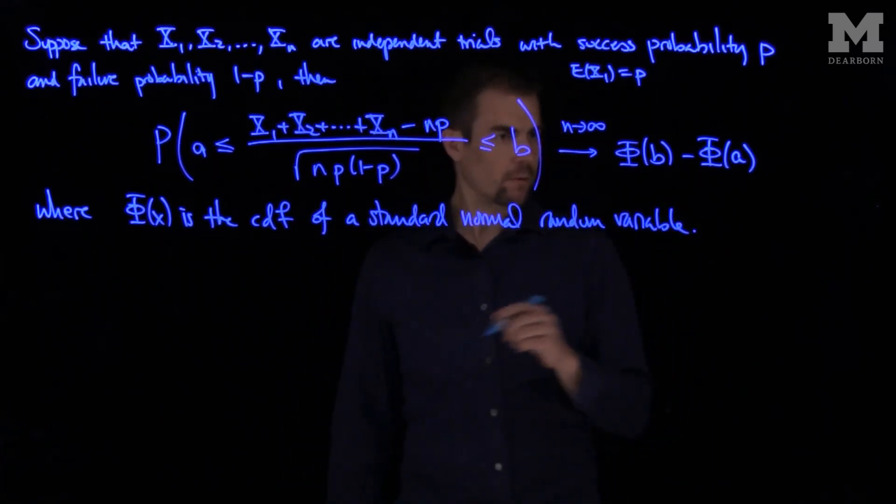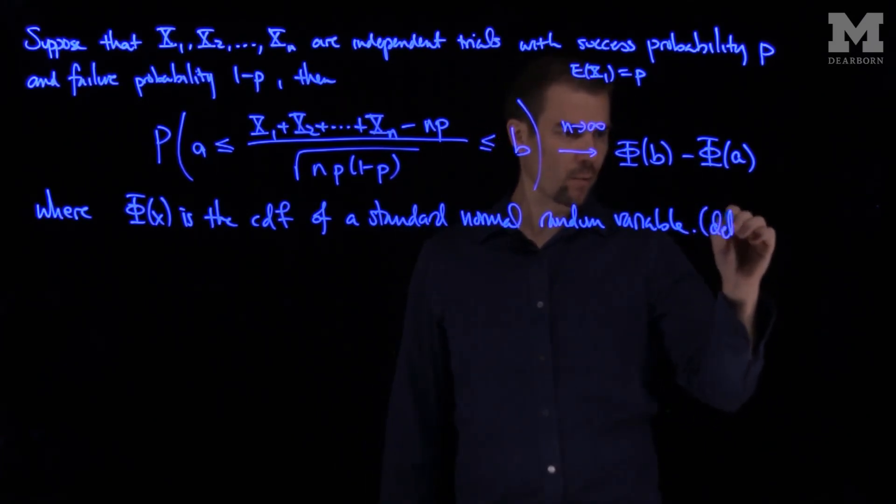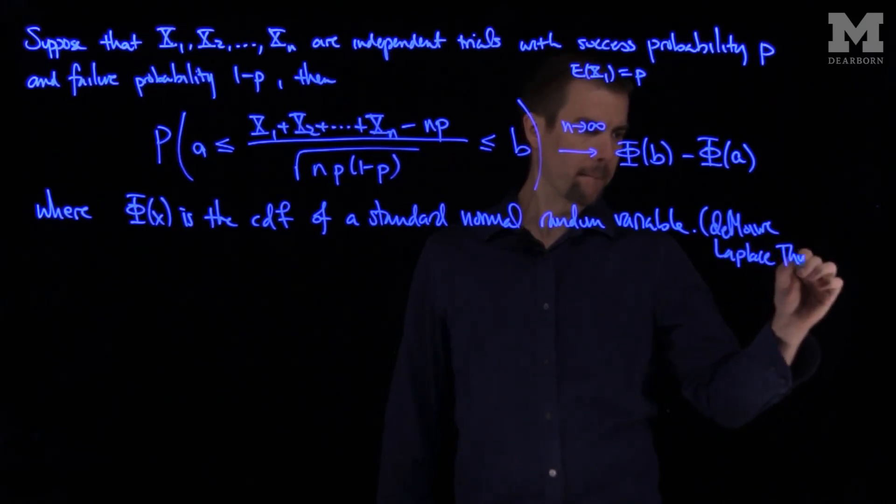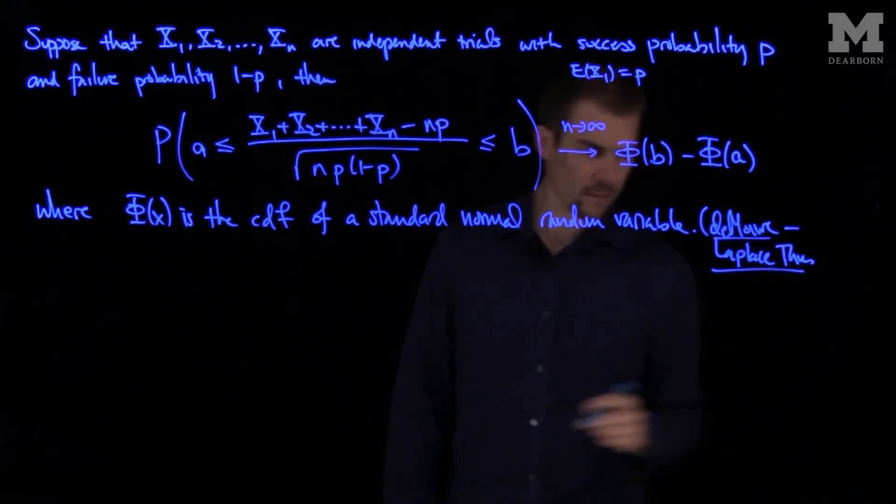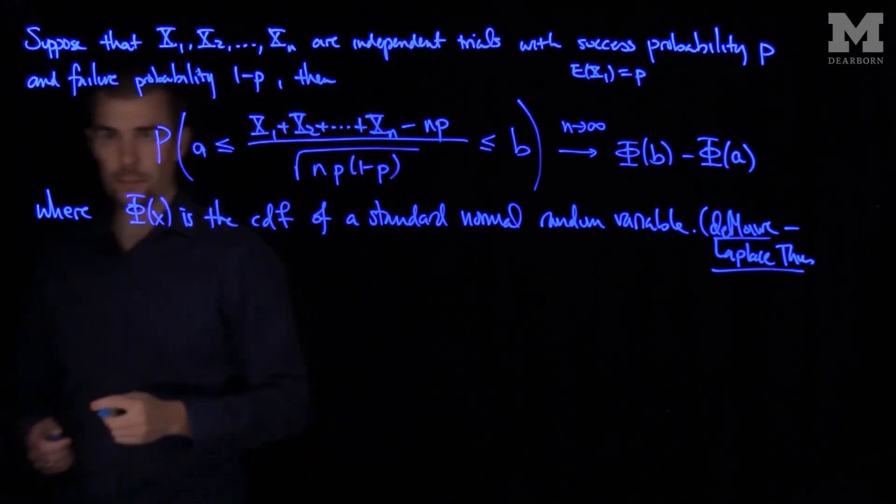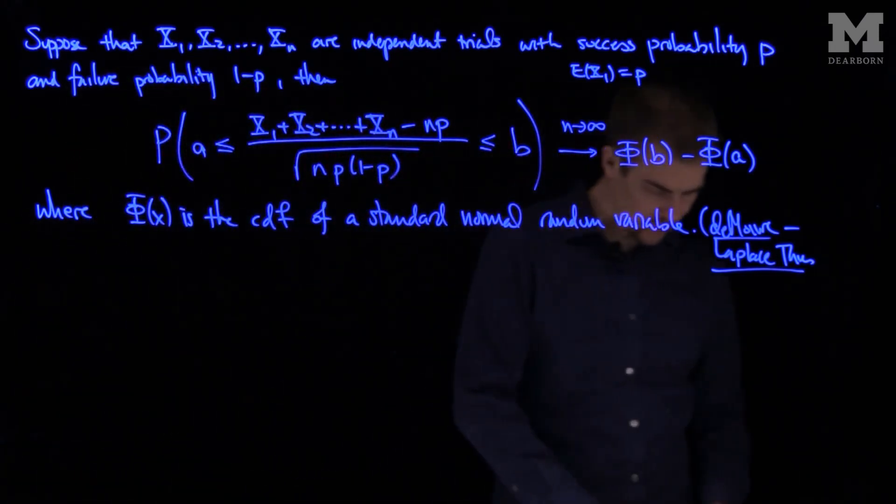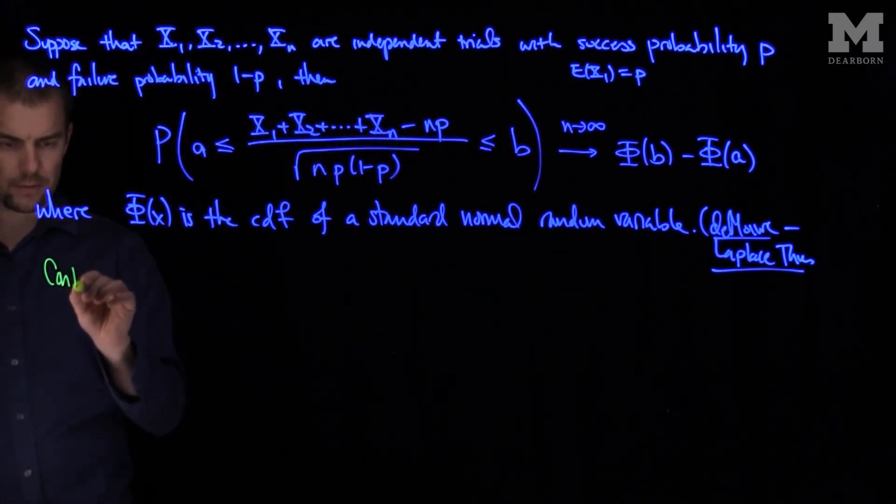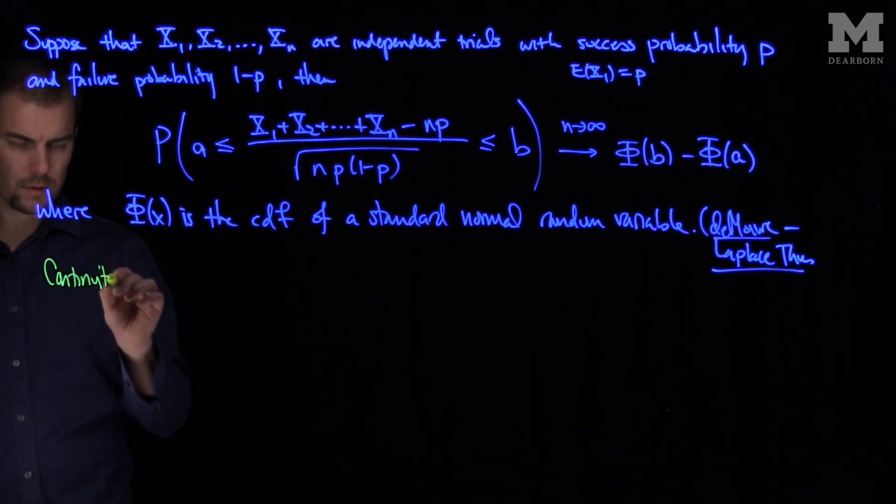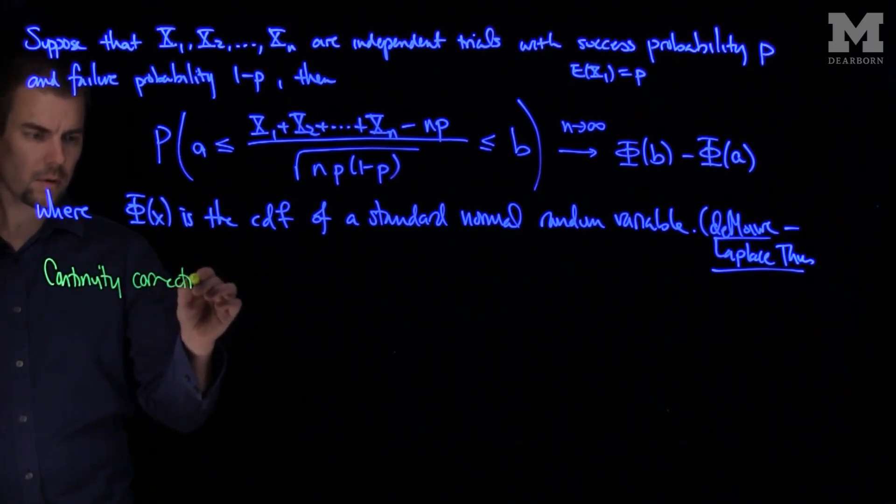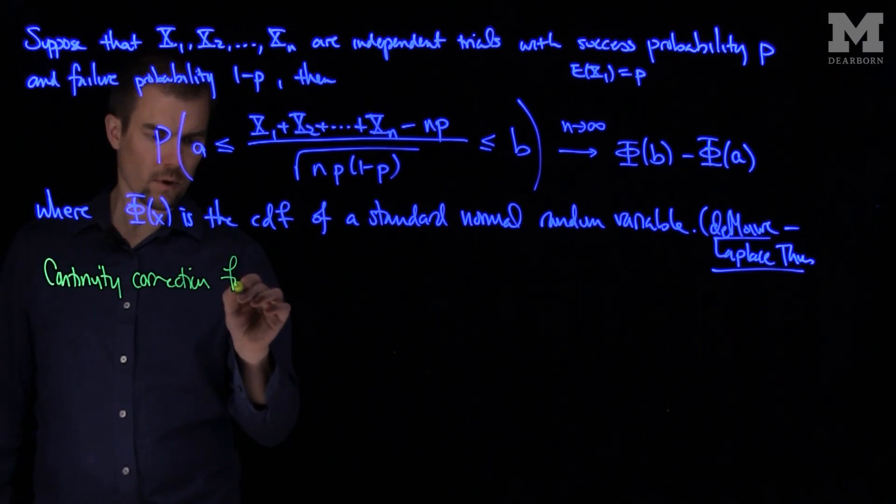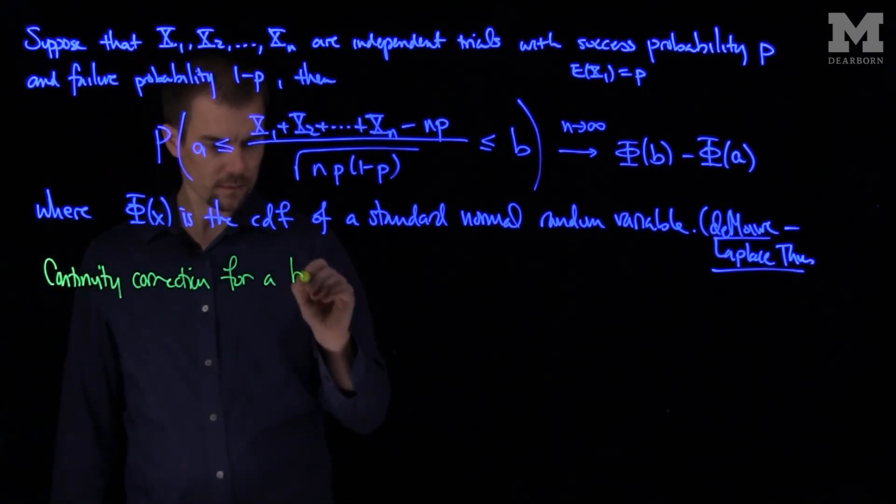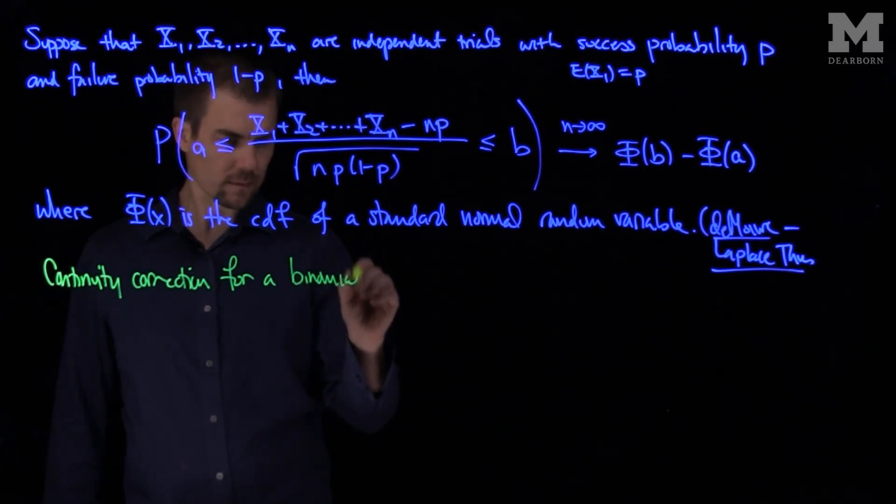And so what this result is known as, this is the de Moivre Laplace theorem. And it's very useful because it provides us with a way of using a continuity correction for a binomial random variable.